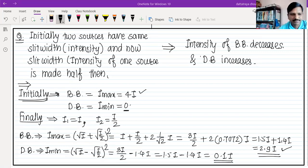If two sources are equally bright, dark bench intensity is zero. If sources are equally bright, dark bench intensity is zero. If sources are unequal bright, dark bench is not completely zero.